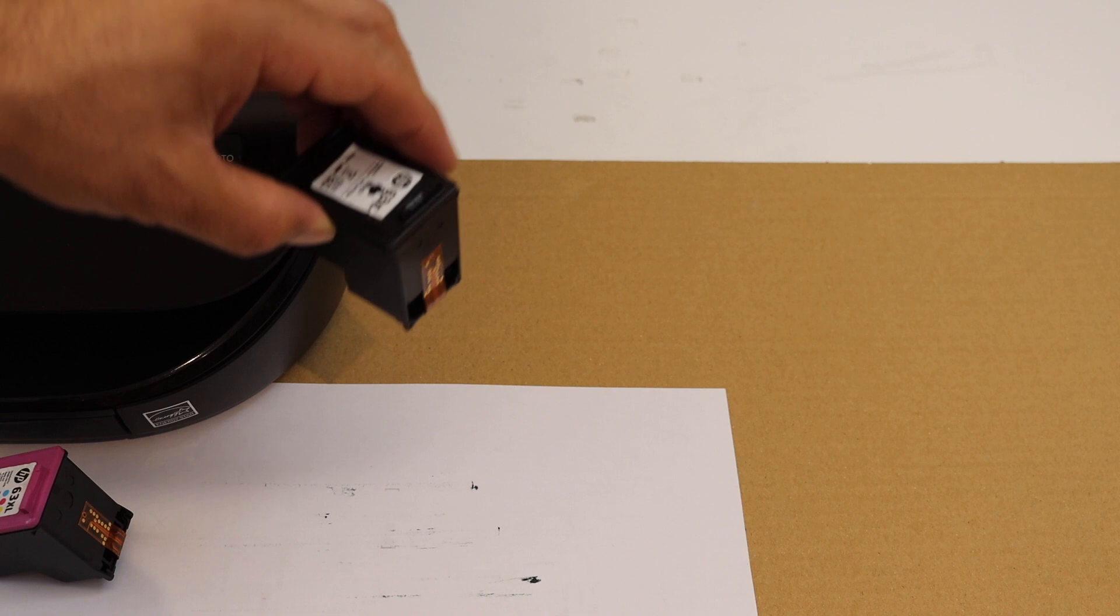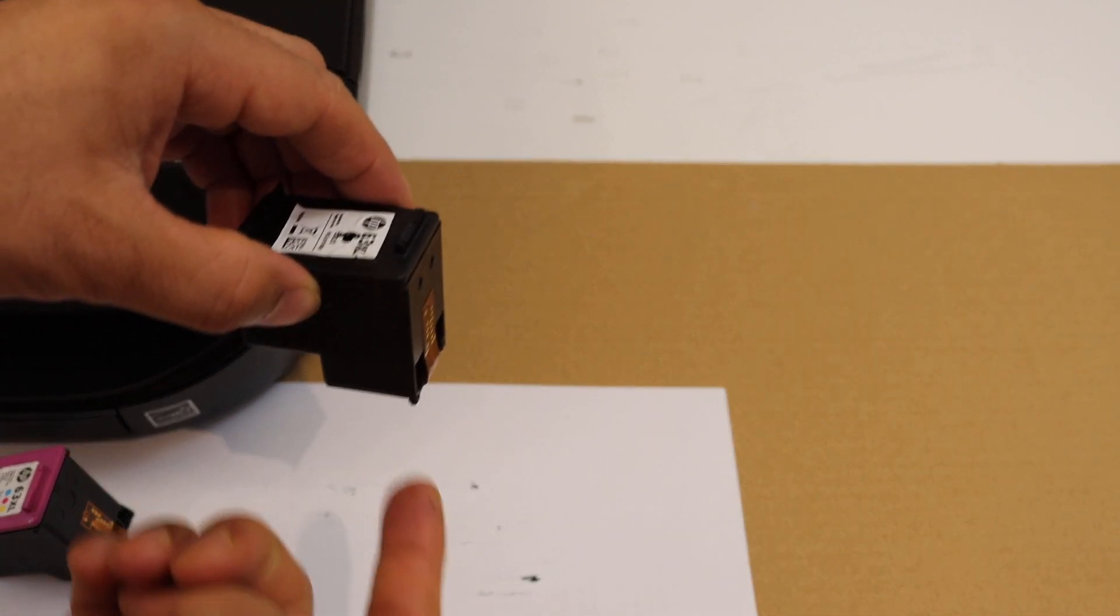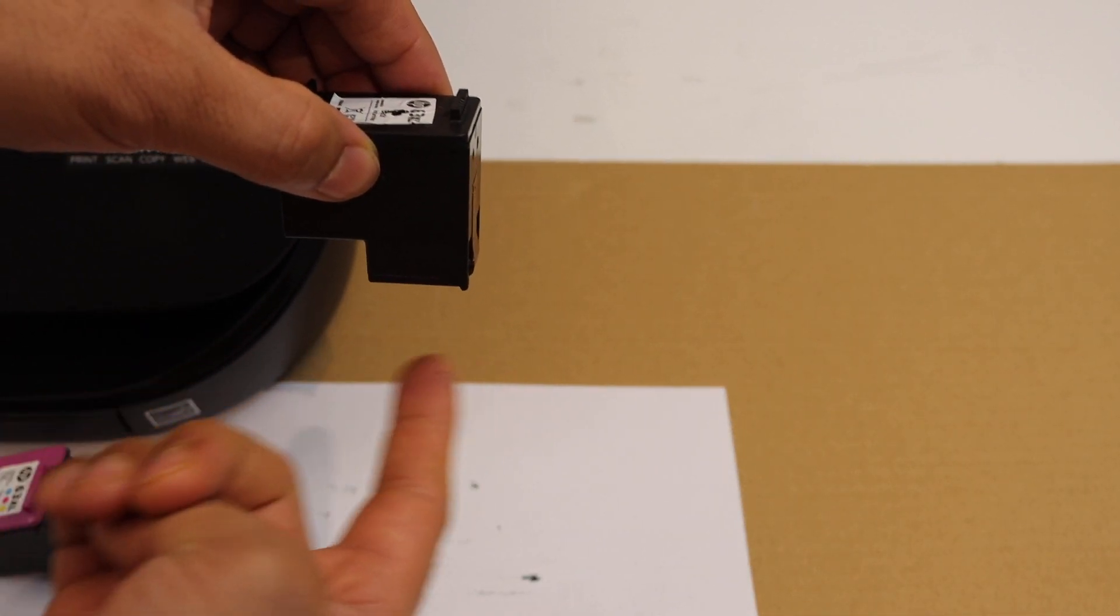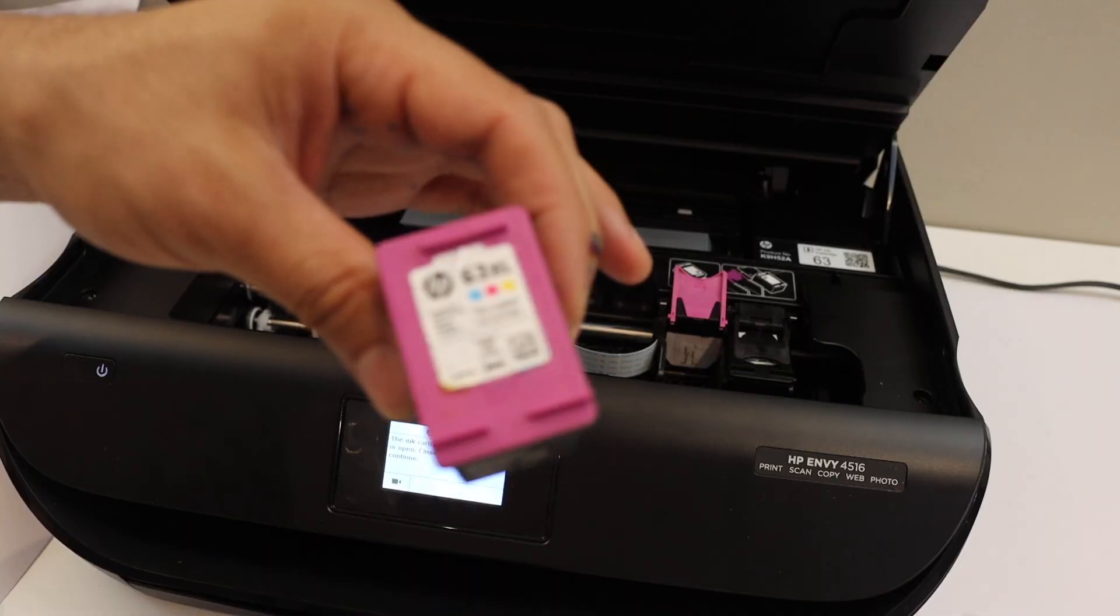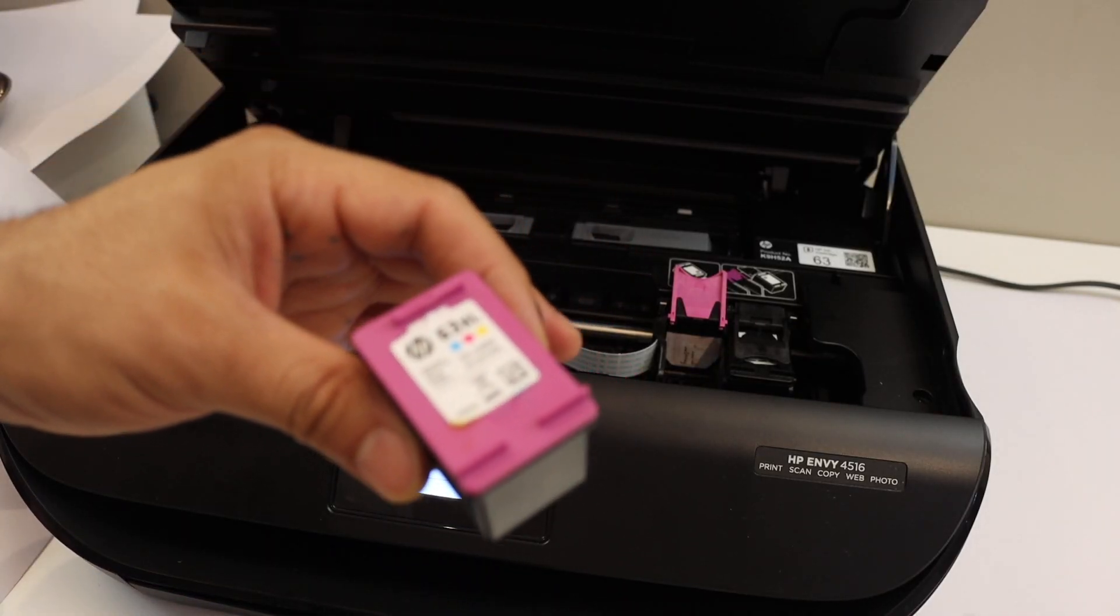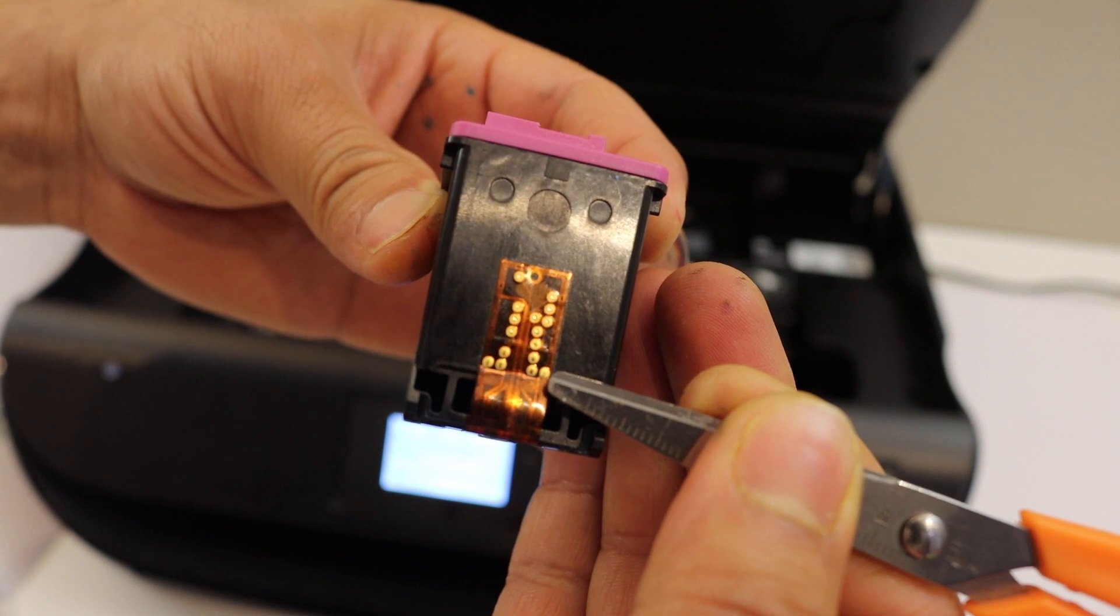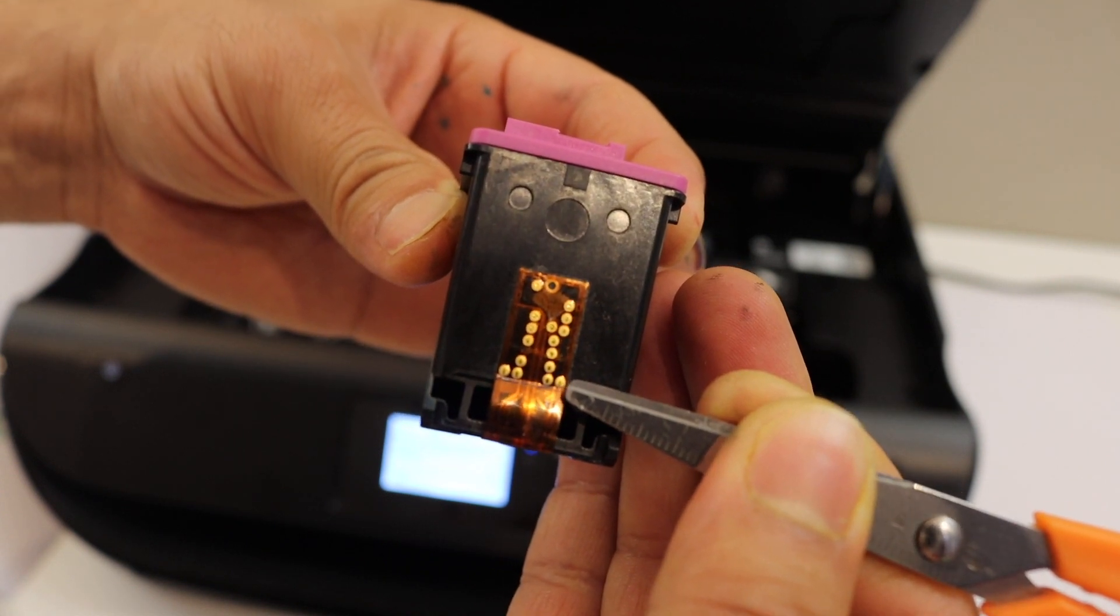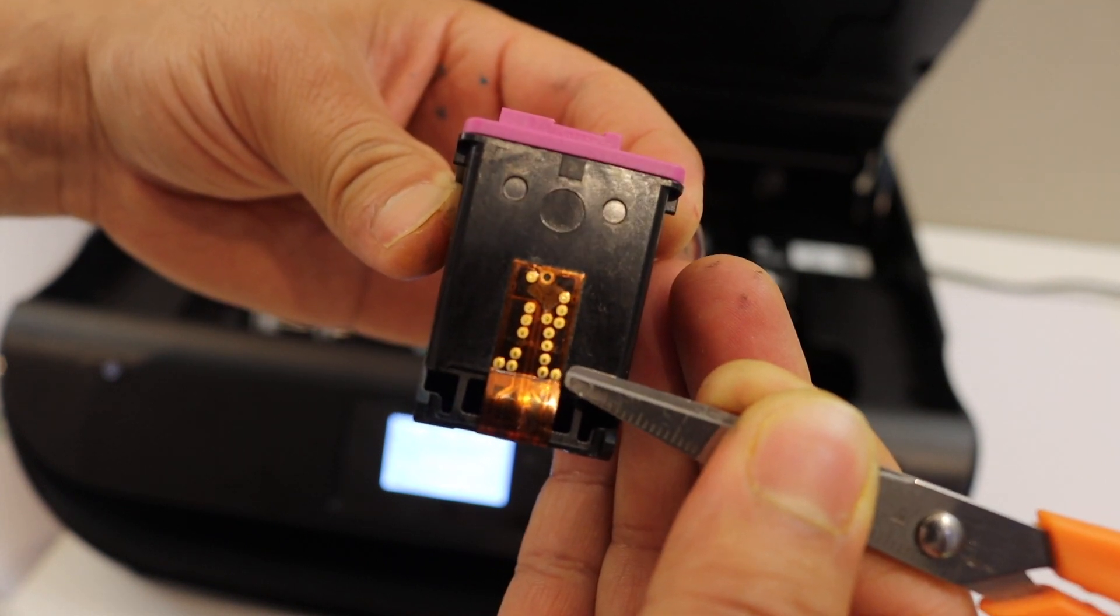Now we have to clean the printheads which we can do at the base using a tissue. I am going to show you how to reset the ink level. Go to the back. You see this portion, the last point here which is this one I have covered.